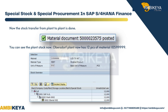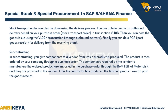Now the stock transfer from plant to plant is done. You can see the plant stock — Oberstdorf plant now has 12 pieces of material 10599999. Stock transport order can also be done using the delivery process: you can create an outbound delivery based on your purchase order stock transport order in transaction VL10B, then post the goods issue using the VL02N transaction for change outbound delivery, and finally do a PGR post goods receipt for the delivery from the receiving plant.